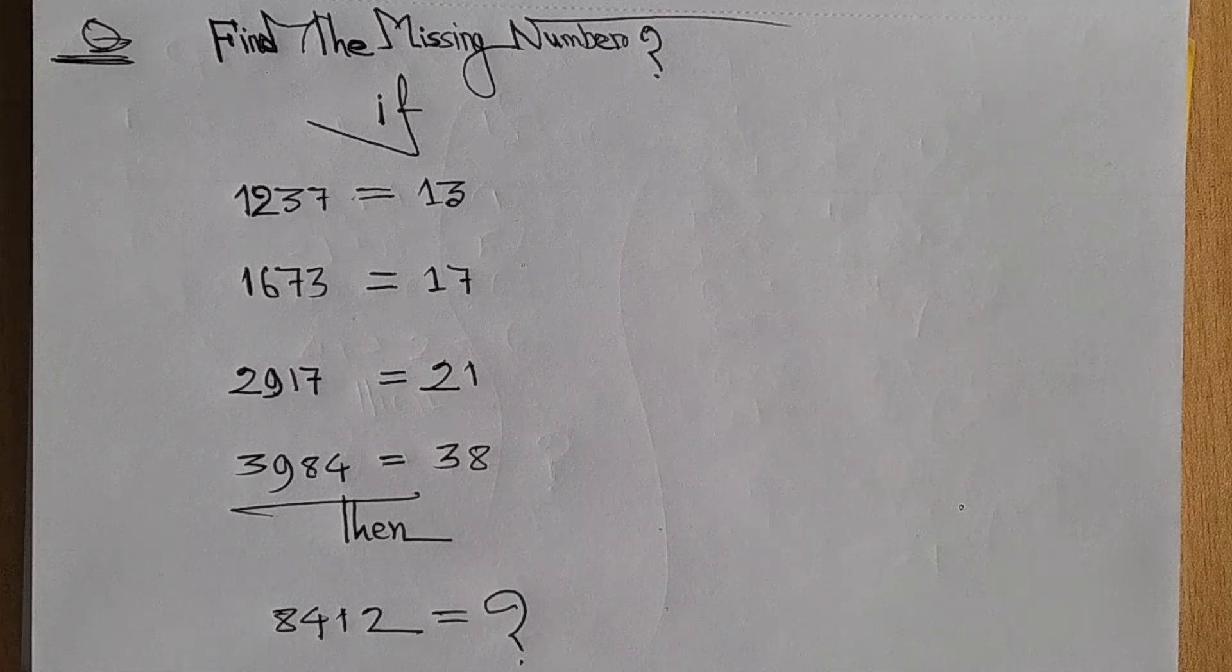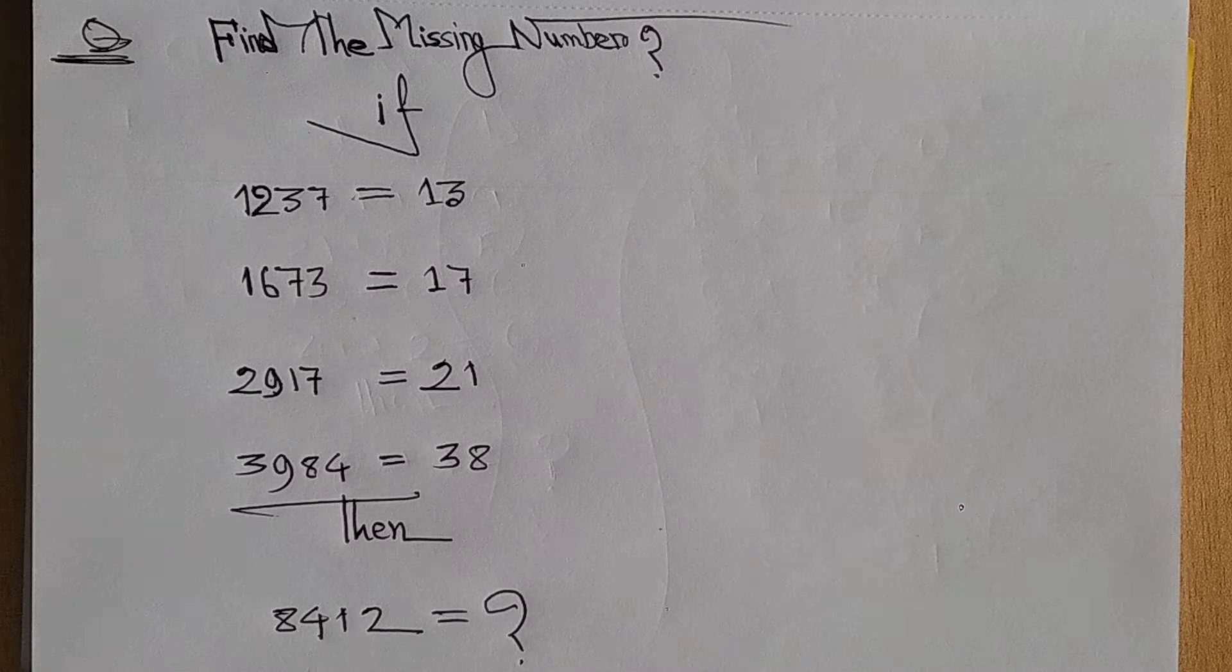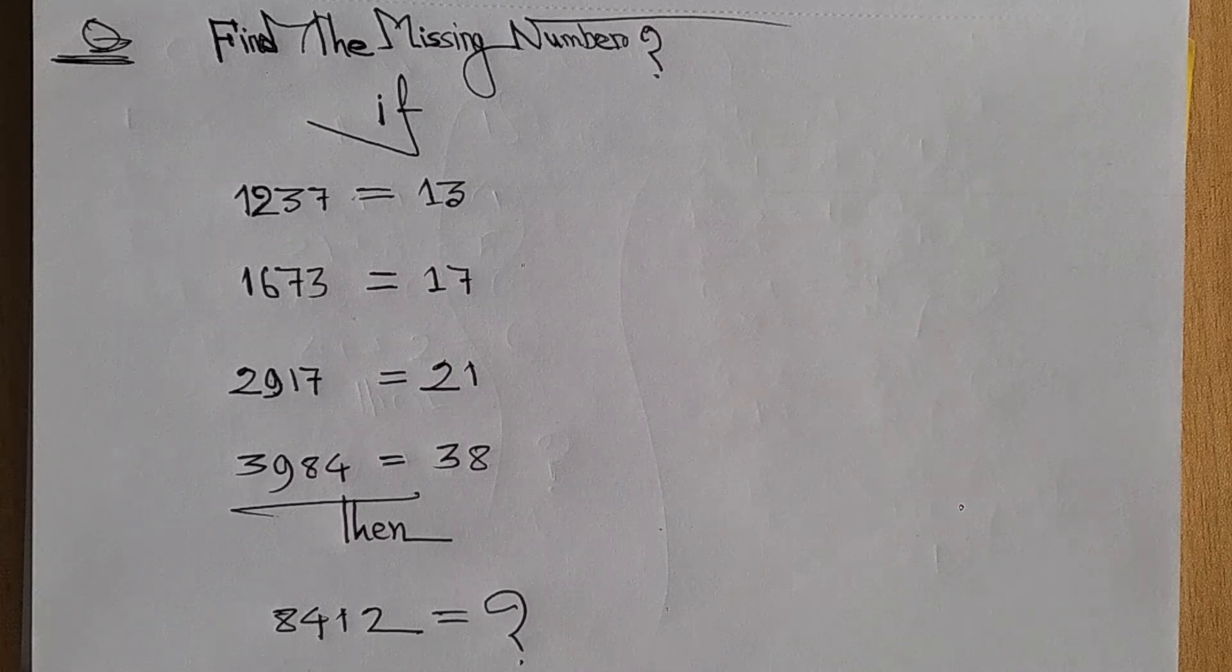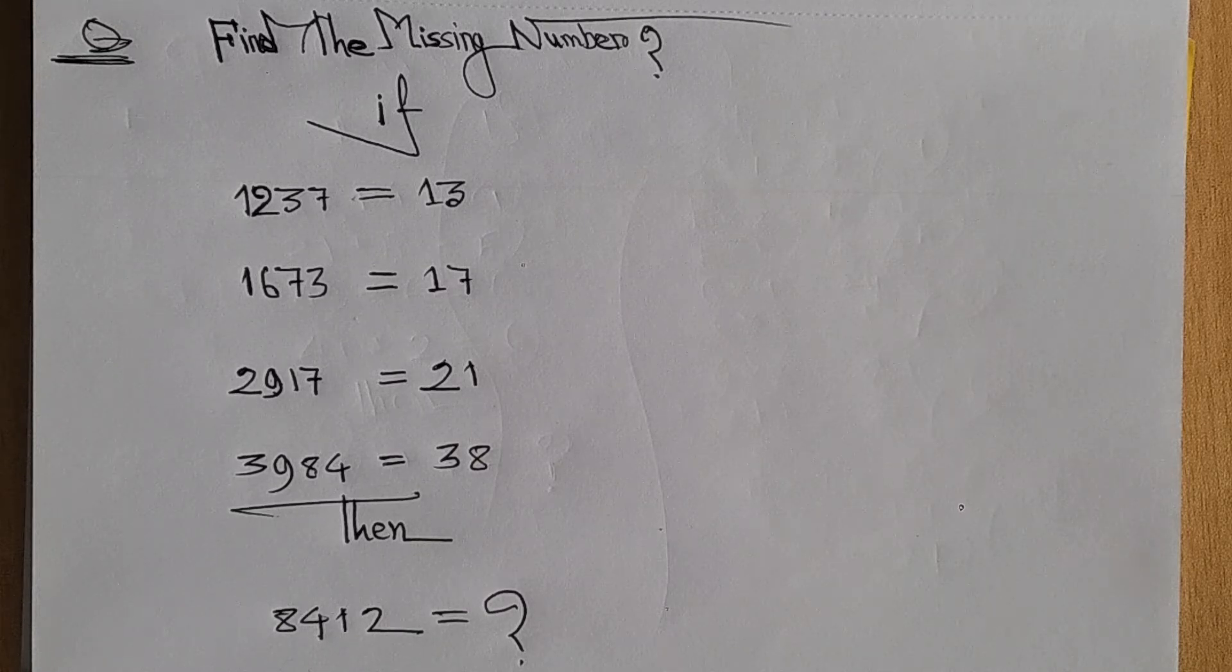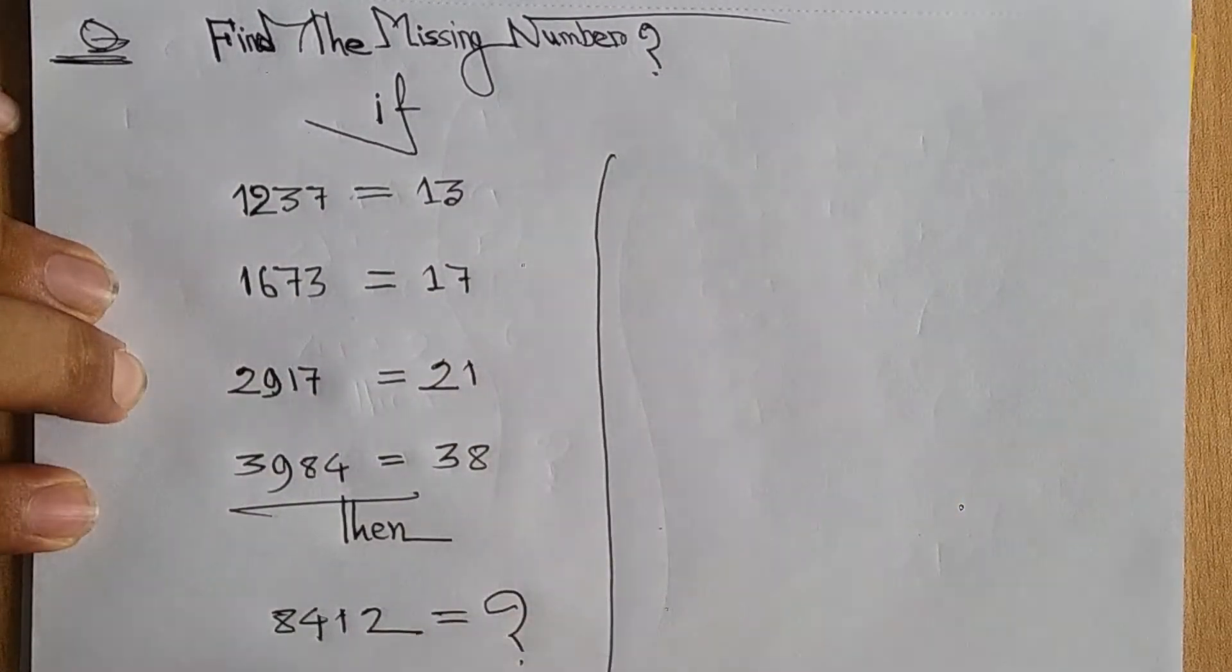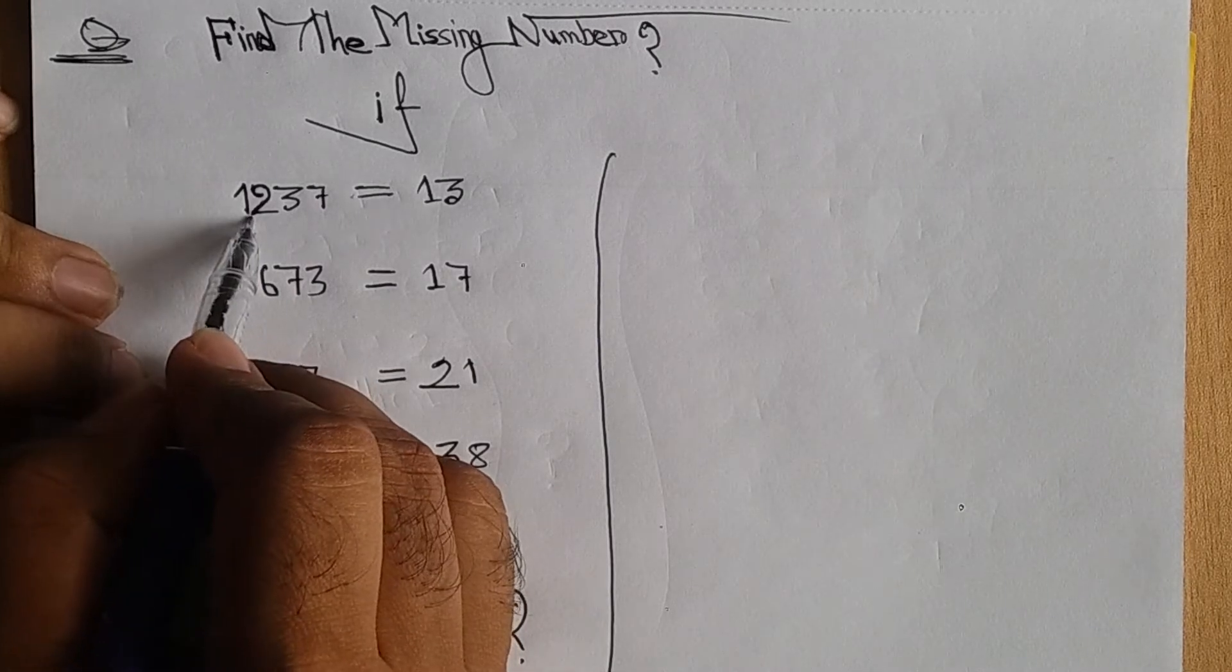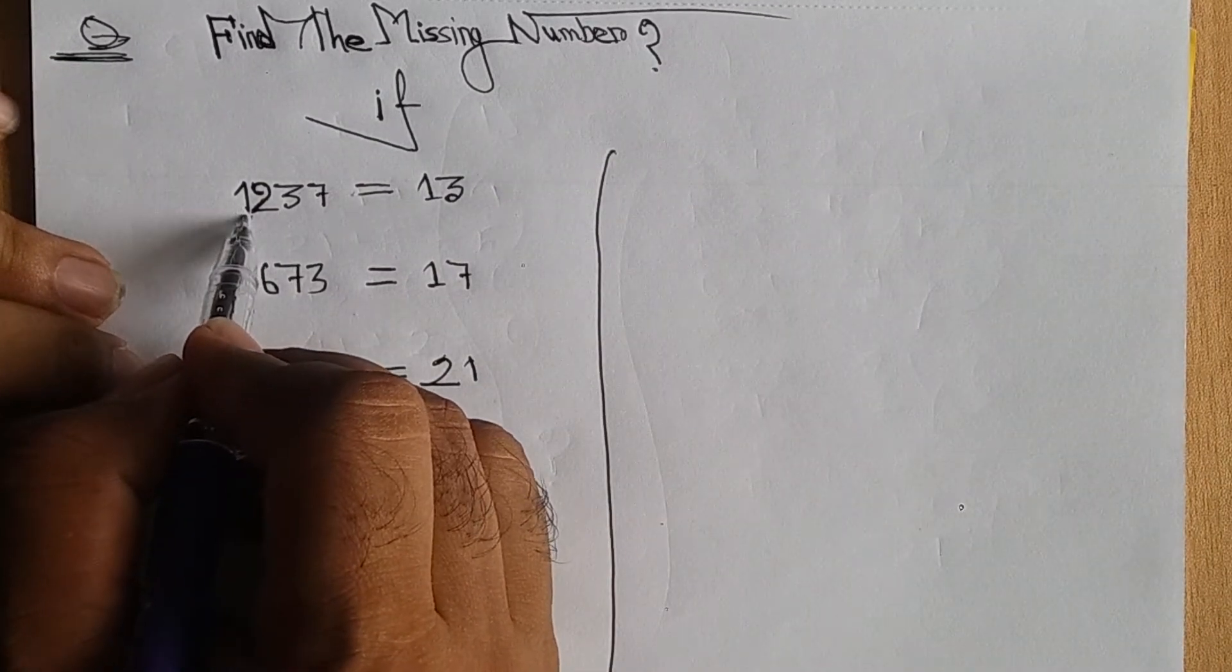I can show you how to find the missing number. The solution involves looking at the digits. So for the whole solution, let me start. For the first one, we have 12 and 37. You can take the digits and add them - one plus two.